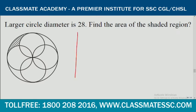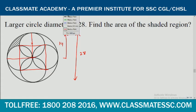What is given? The diameter is 28, so half of it will be 14. The diameter of the smaller circle will be 14. Join these four points and we will get a square, as well as joining these two lines.